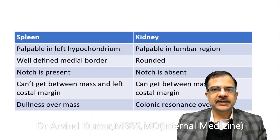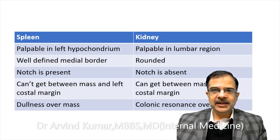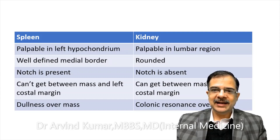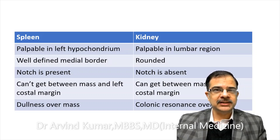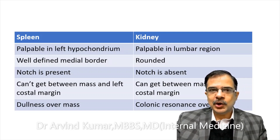Other differences between the spleen and the kidney: the spleen is palpable in the left hypochondrium while the kidney is palpable in the lumbar area. The spleen has a well-defined medial border with a notch, while the kidney has a rounded shape and no notch. We can't get between the mass and the left costal margin in splenomegaly, while we can get between the mass and the costal margin if it is the kidney. There is dullness over the spleen, while there can be colonic resonance over a kidney mass.